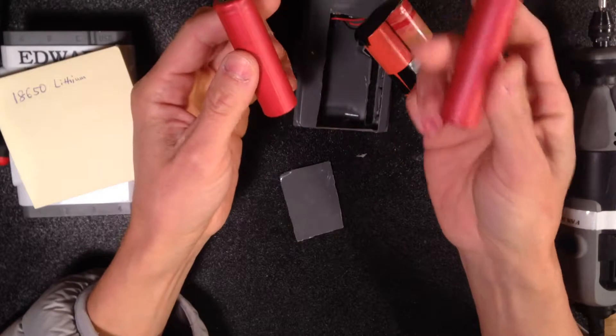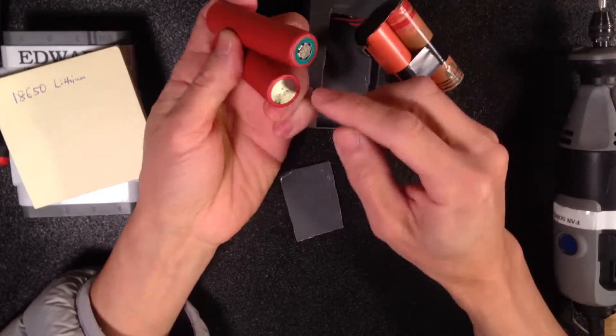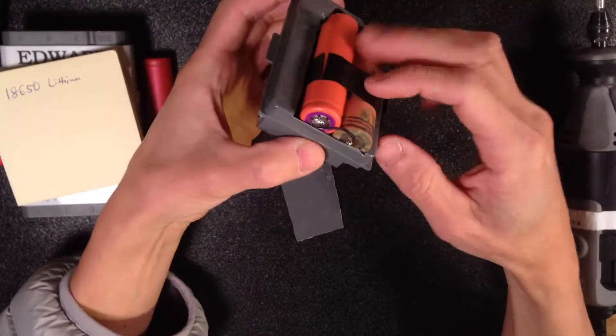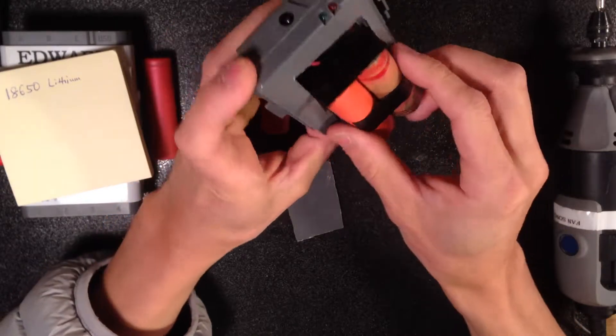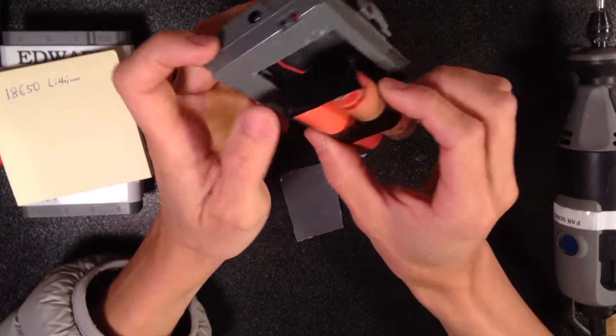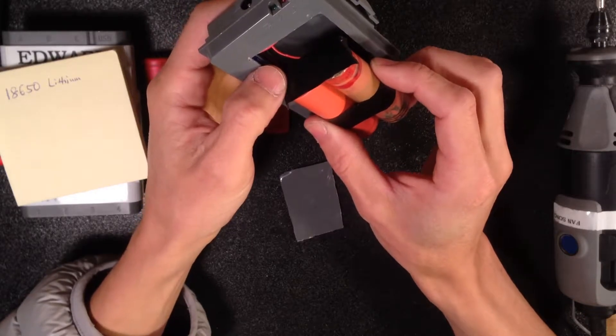So then after you got those batteries, you just solder it, connect them negative to positive. So negative to positive connected here. And eventually you get connected to the red to the positive and the black to the negative.